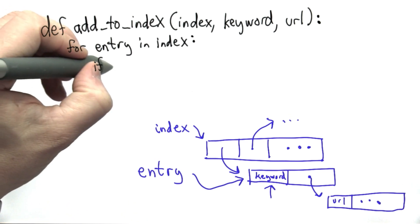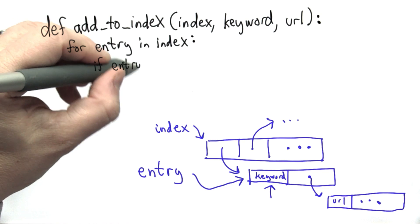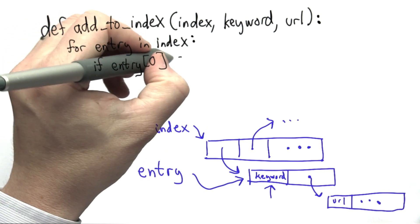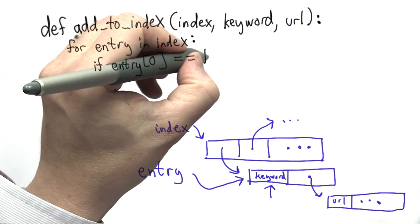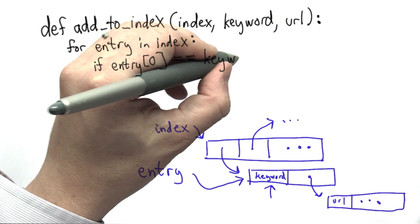We're going to test if the value at position zero in entry is identical to the keyword that's passed in. We'll use the double equal comparison to test that. If it is equal, well we found a match.